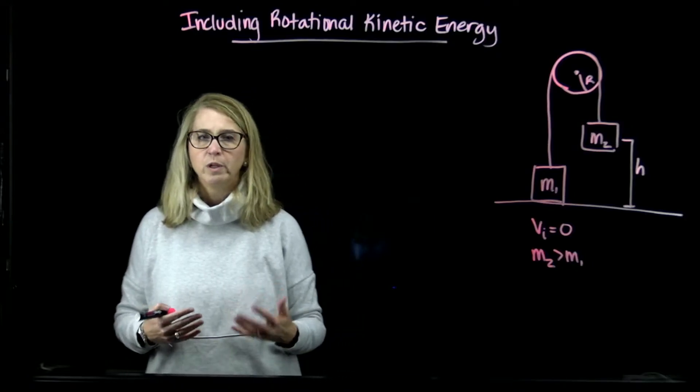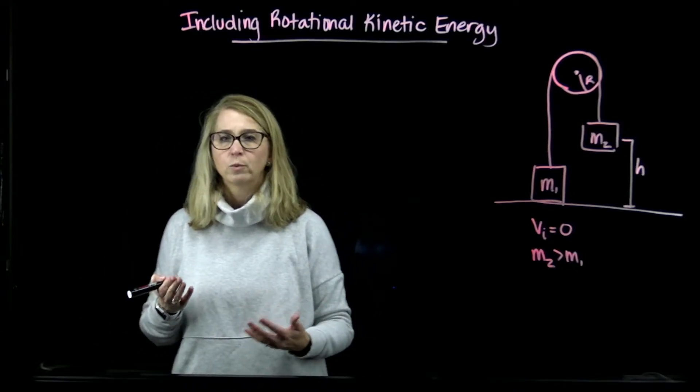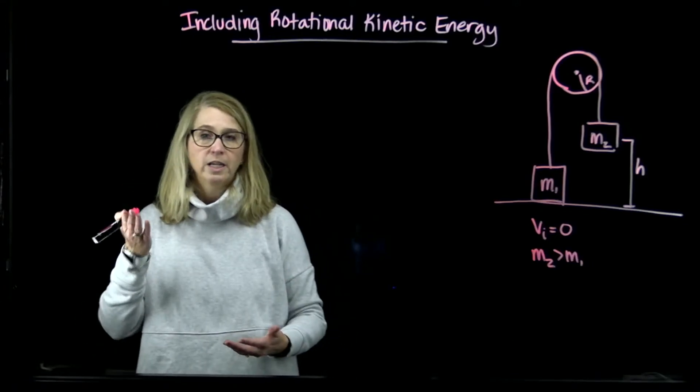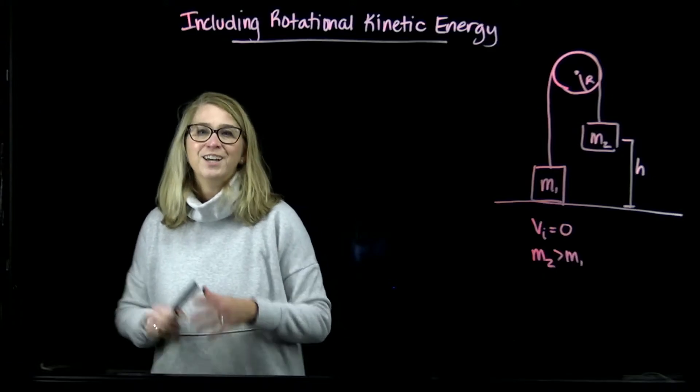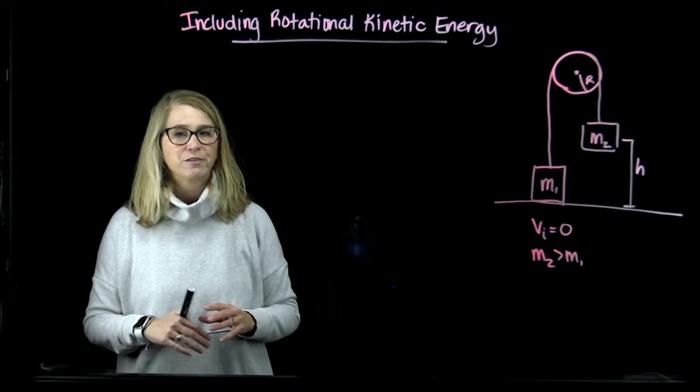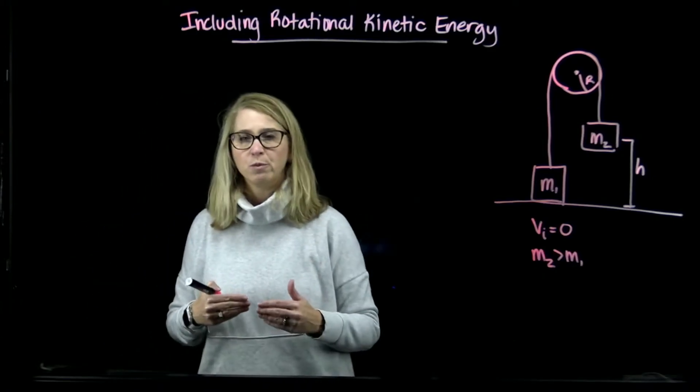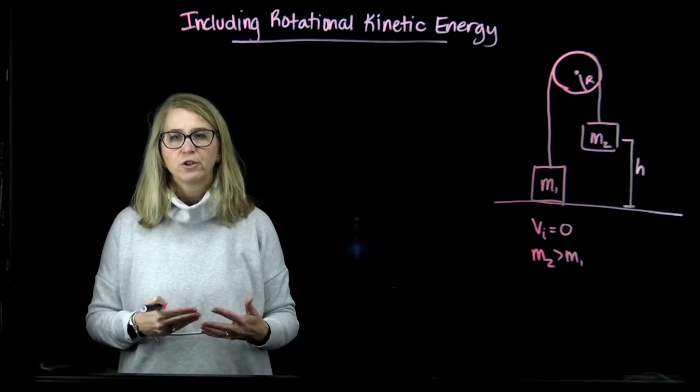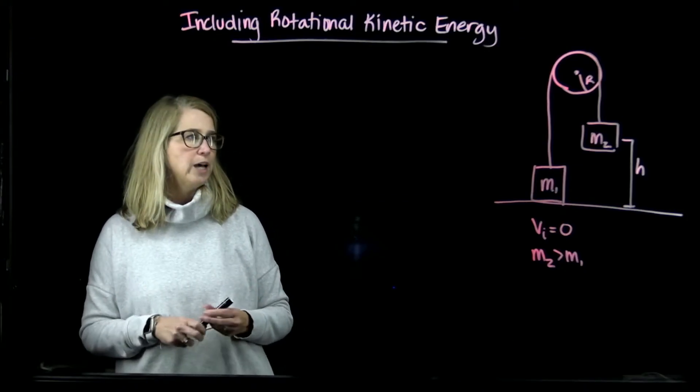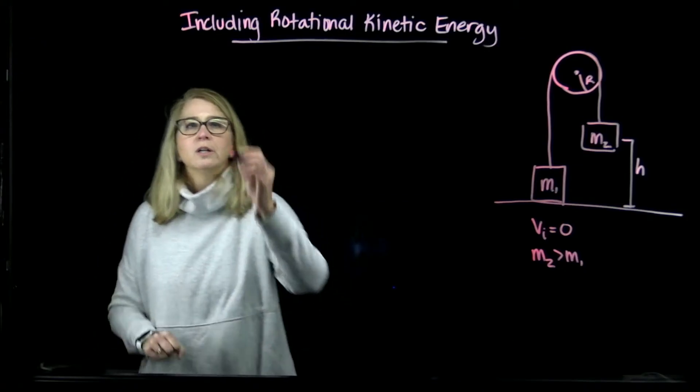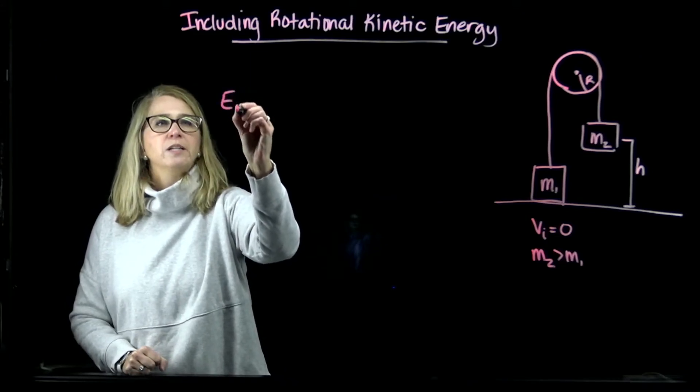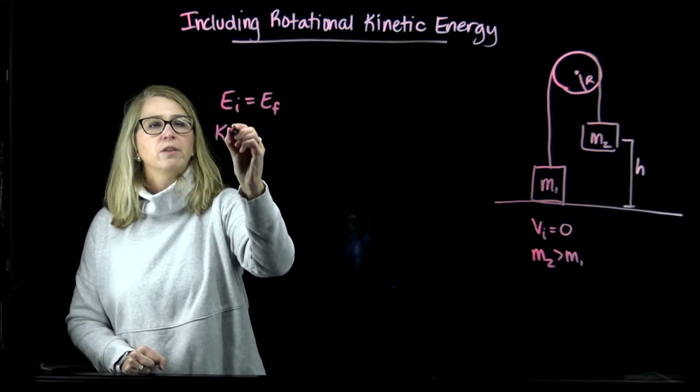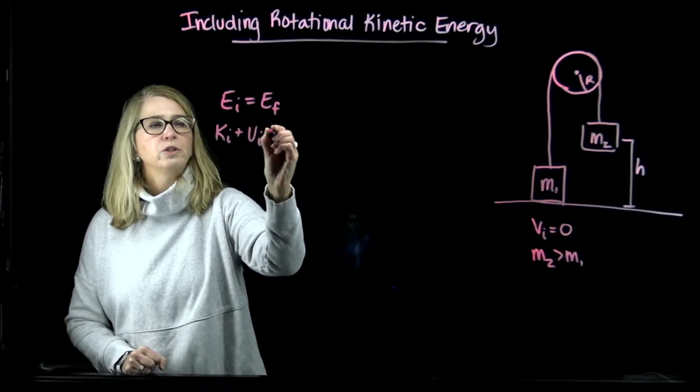We wanted to figure out what the final speed of the system would be, what would be the speed of mass 2 when it hits the ground, which of course would be the same as the speed of mass 1. But we also have to think about the fact that as those masses are moving, the pulley is rotating and it will have rotational kinetic energy, and we're going to include that in this scenario.